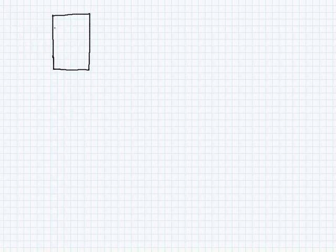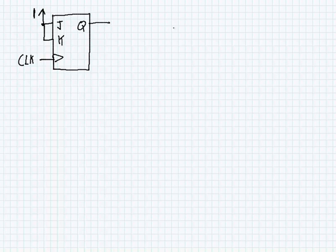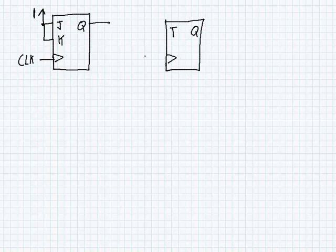Now the second application is using flip-flops as frequency dividers. I'm going to draw out three really simple flip-flop circuits. The first one is a JK flip-flop where I tie J and K together and connect them to 1, so J and K are always 1. I've got my clock signal coming in and my Q signal coming out. I could also do the same thing with a toggle flip-flop, with T connected to 1.